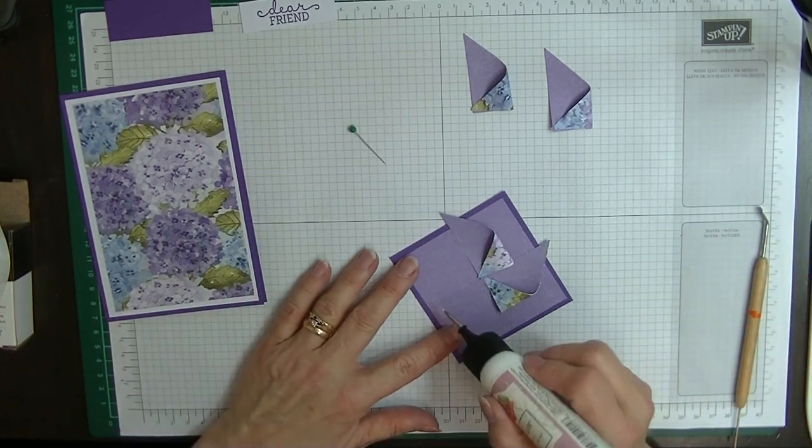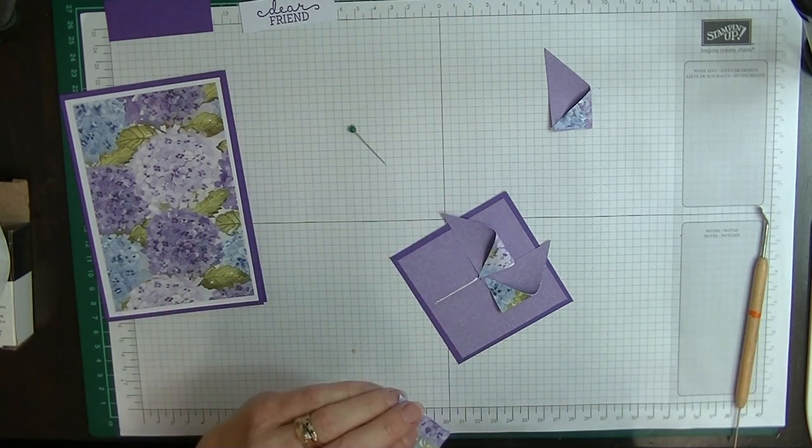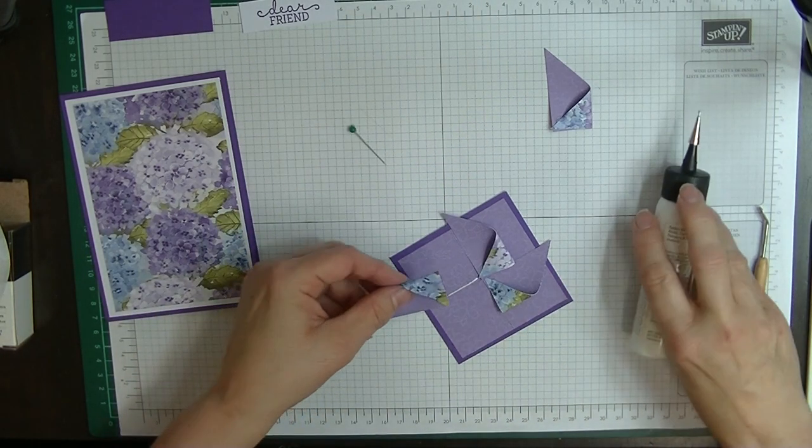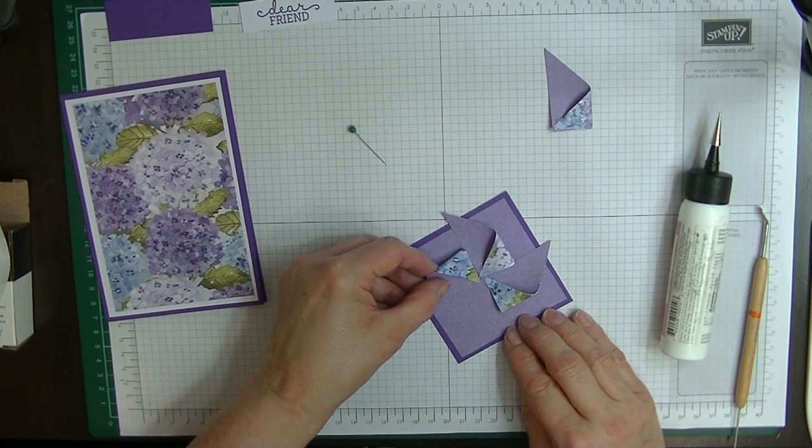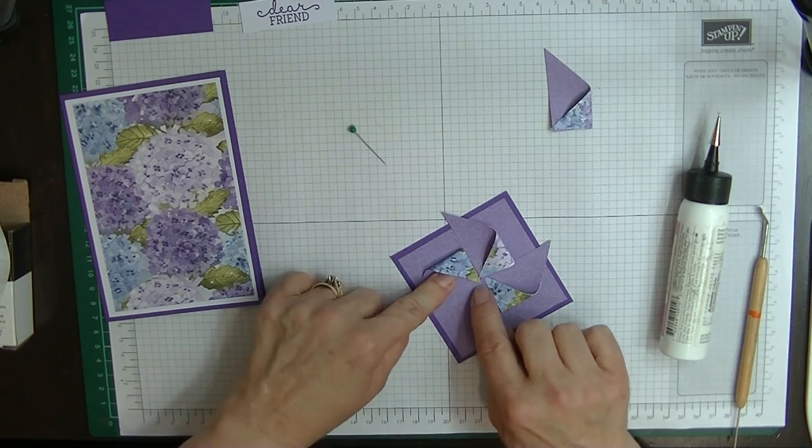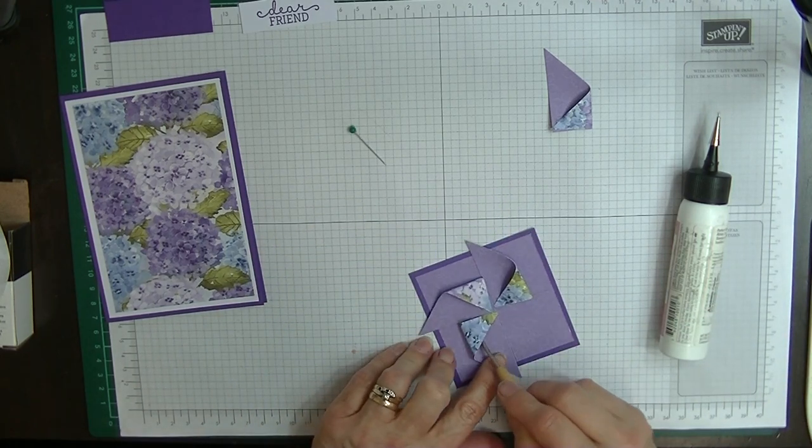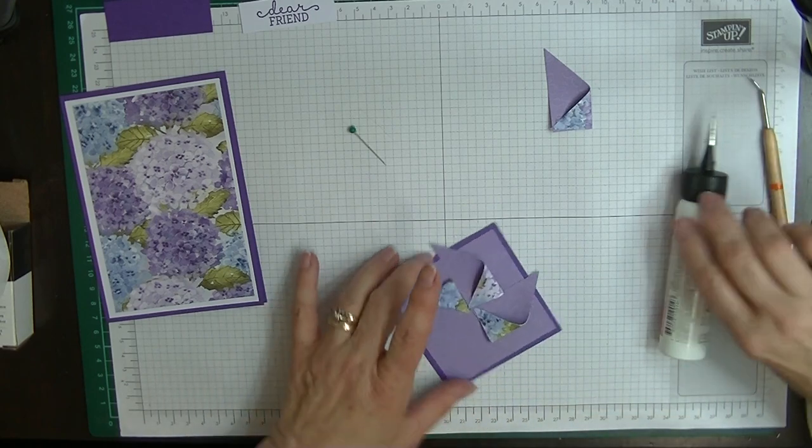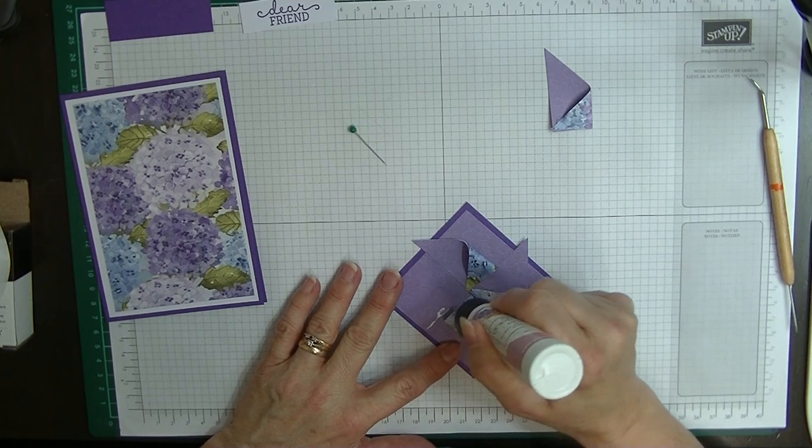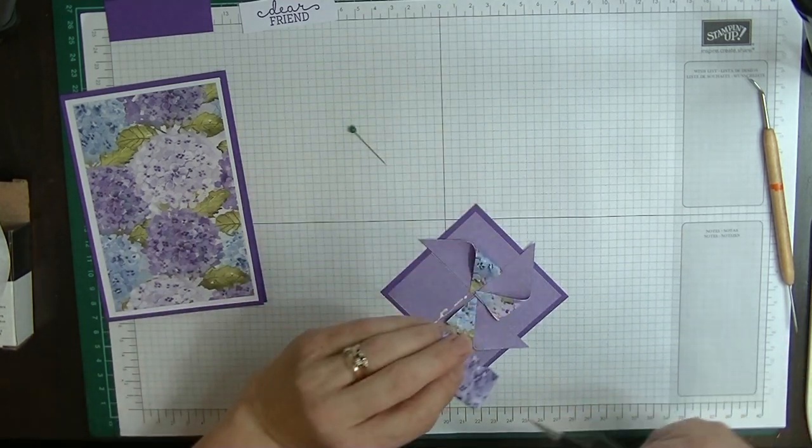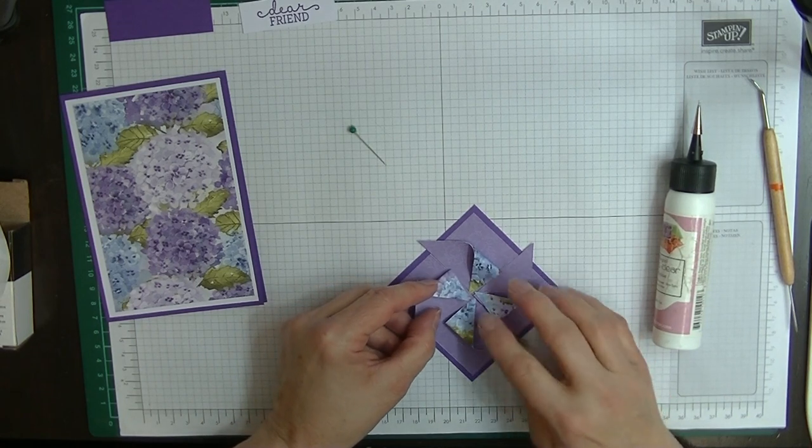Just use my little tool to get in there just to make sure it's down nice and tight. We just keep on going around in the same manner, right the way around, butting it up to the last one and along that score line that we put in there. And the last, lucky last one along here. We have our pinwheel.